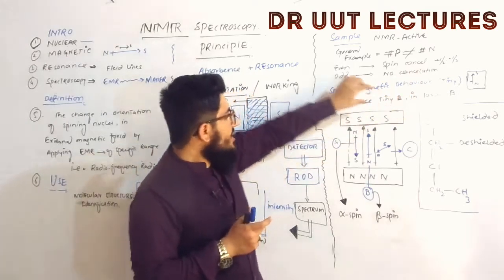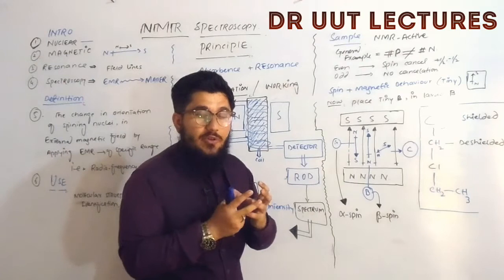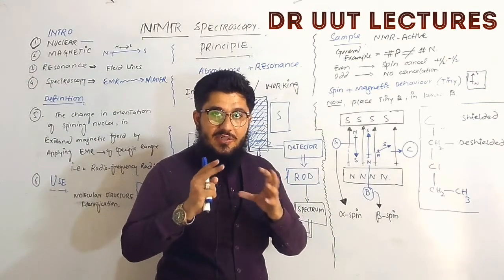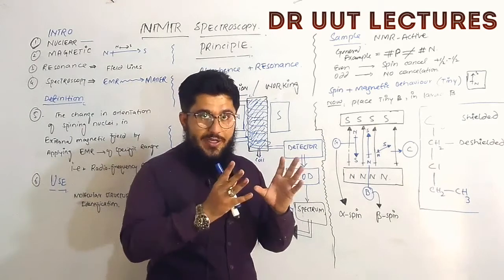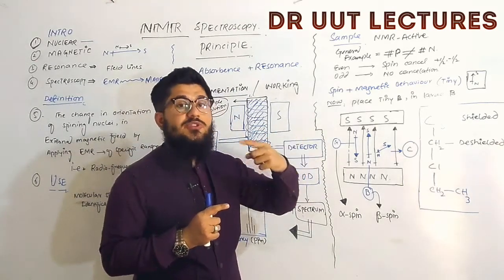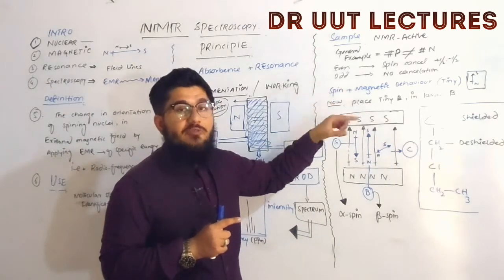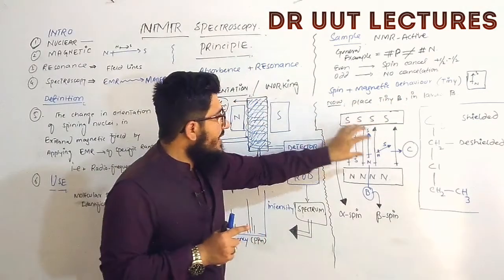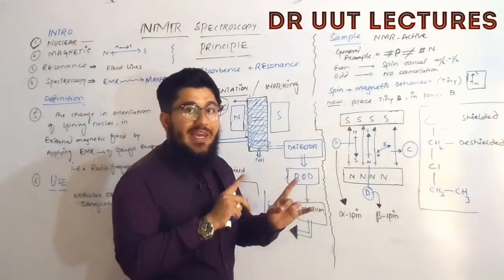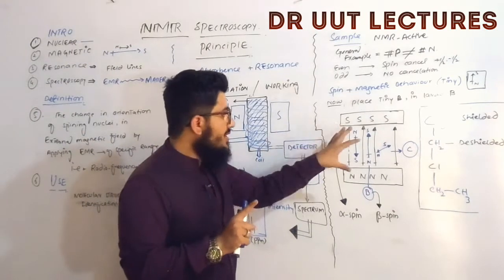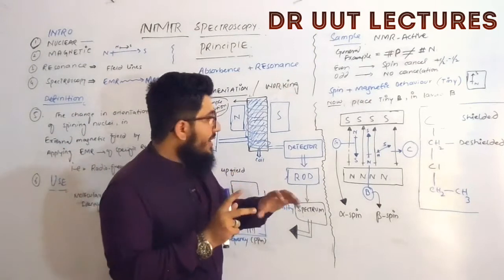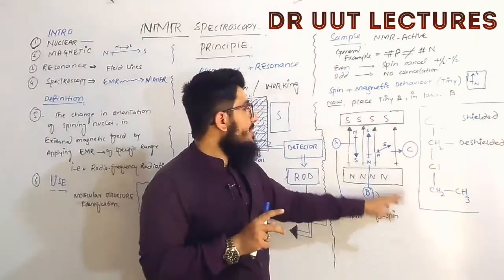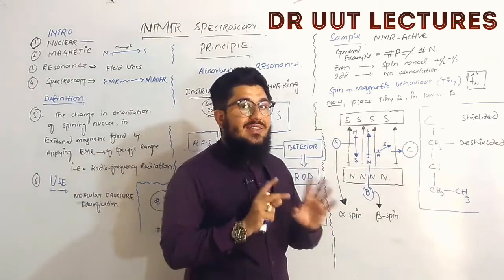When a charged particle is in motion it generates a magnetic field — as we studied in physics. So our spinning nucleus generates magnetic properties and behaves like a tiny magnet. When we place this small magnet inside the large magnet, the large magnet interacts in three distinct ways: alpha spin (aligned with field), beta spin (opposite to field), or an inclined spin.